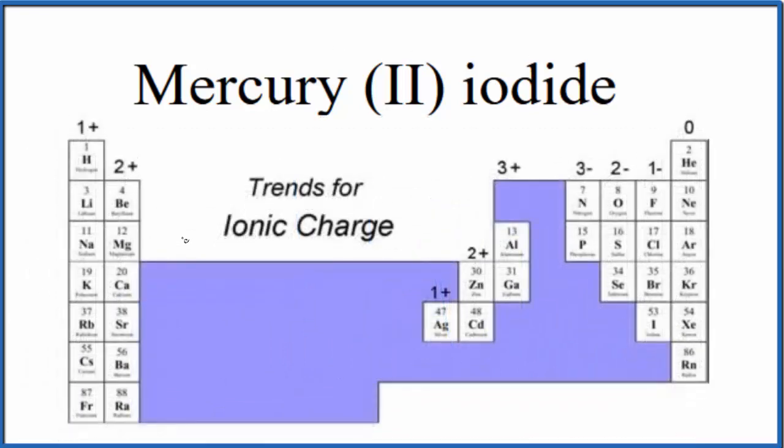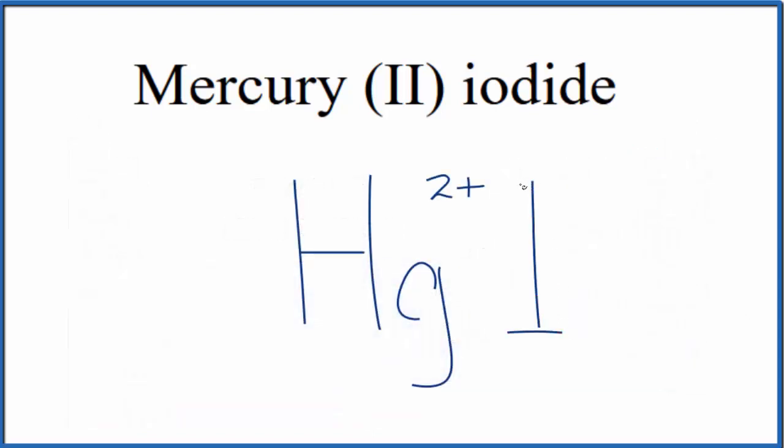So we have the periodic table organized by ionic charge, and right here is iodine. Everything in this group right here, the halogens, is going to have a 1- ionic charge. So we'll write I, that's our iodide ion, and that has a 1- ionic charge.